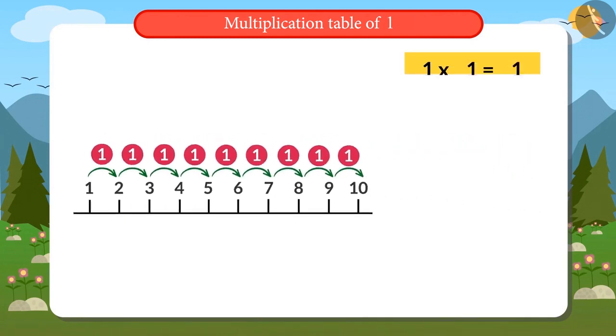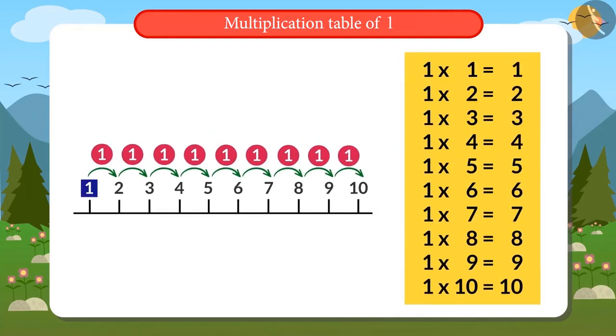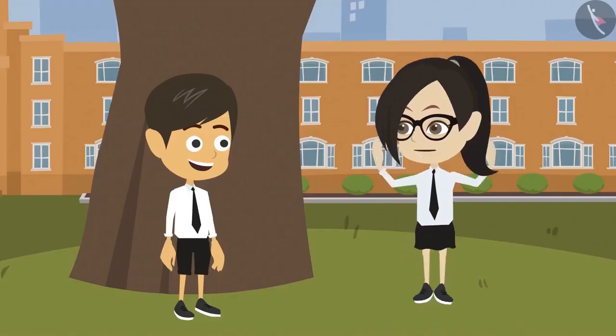And I will read out the table of one. One ones are one. One twos are two. One threes are three. One fours are four. One fives are five. One sixes are six. One sevens are seven. One eights are eight. One nines are nine. One tens are ten.